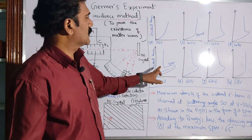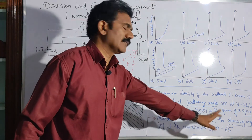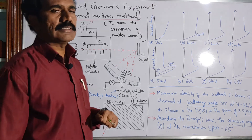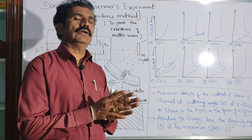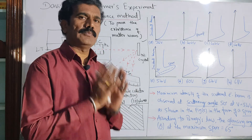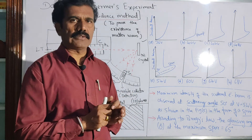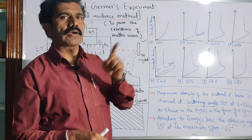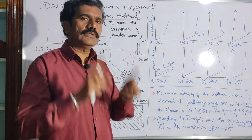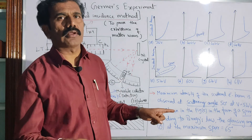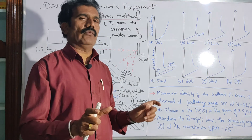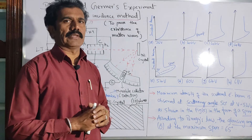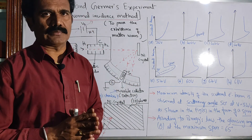They considered this particular case of the glancing angle 65 degrees and calculated the wavelength using Bragg's law. Then, by considering de Broglie's hypothesis — the law or hypothesis used to calculate the wavelength of the matter waves — if the electron beam is behaving like a matter wave, then you can calculate its wavelength according to de Broglie's hypothesis. Calculate both the wavelengths according to Bragg's law and according to de Broglie's wavelength. If you are able to find the same value of wavelength, then it confirms the existence of matter waves associated with the electron beam.